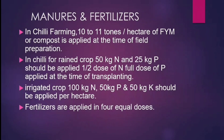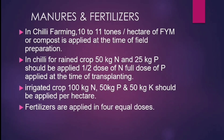Manures and Fertilizers. In Chilli farming, 10 to 11 tons per hectare of farmyard manure or compost is applied at the time of field preparation. For rainfed crop, 50 kg nitrogen and 25 kg phosphorus should be applied, with half dose of nitrogen and full dose of phosphorus applied at the time of transplanting. For irrigated crop, 100 kg nitrogen, 50 kg phosphorus and 50 kg potassium should be applied per hectare. Fertilizers are applied in four equal doses.